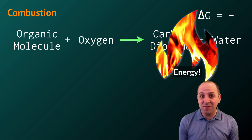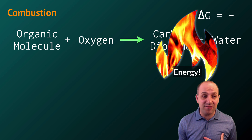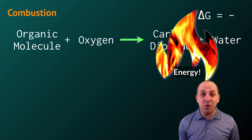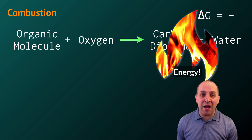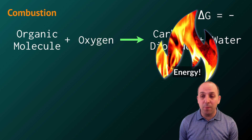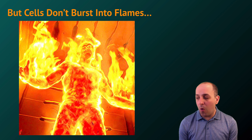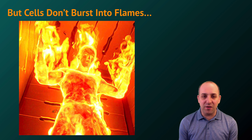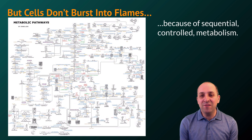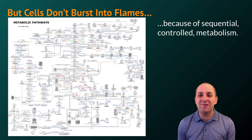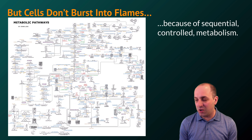It also happens to be what occurs inside biological systems whenever they get energy from food. Respiration reactions are combustion reactions, but cells don't burst into flames. Why is that? The answer is because cellular metabolism is sequential and controlled.